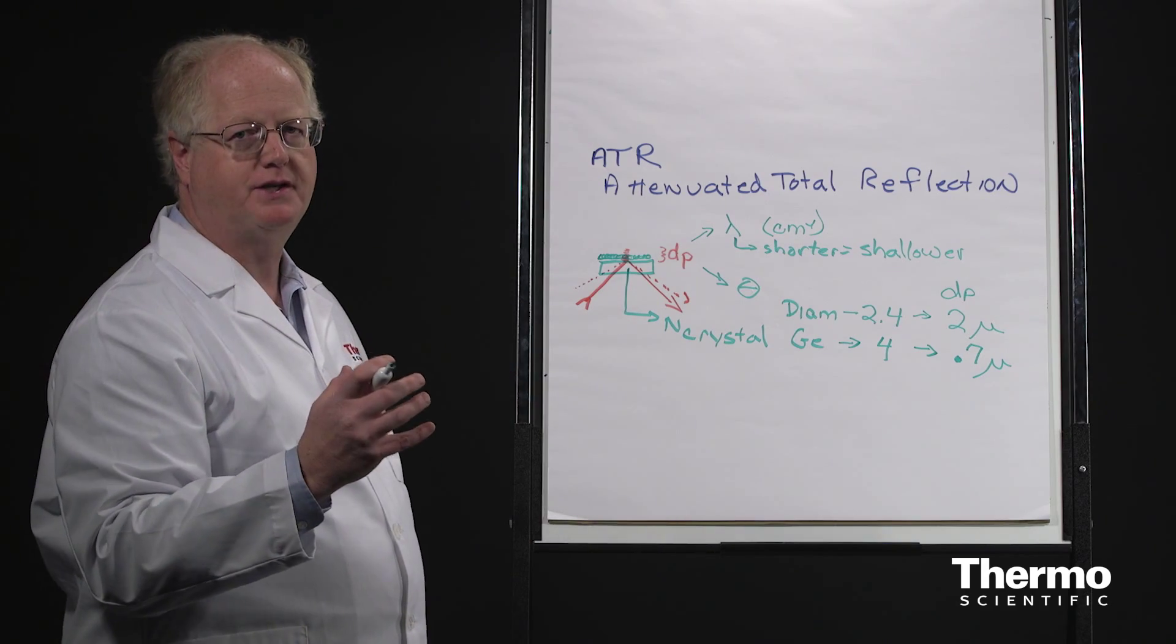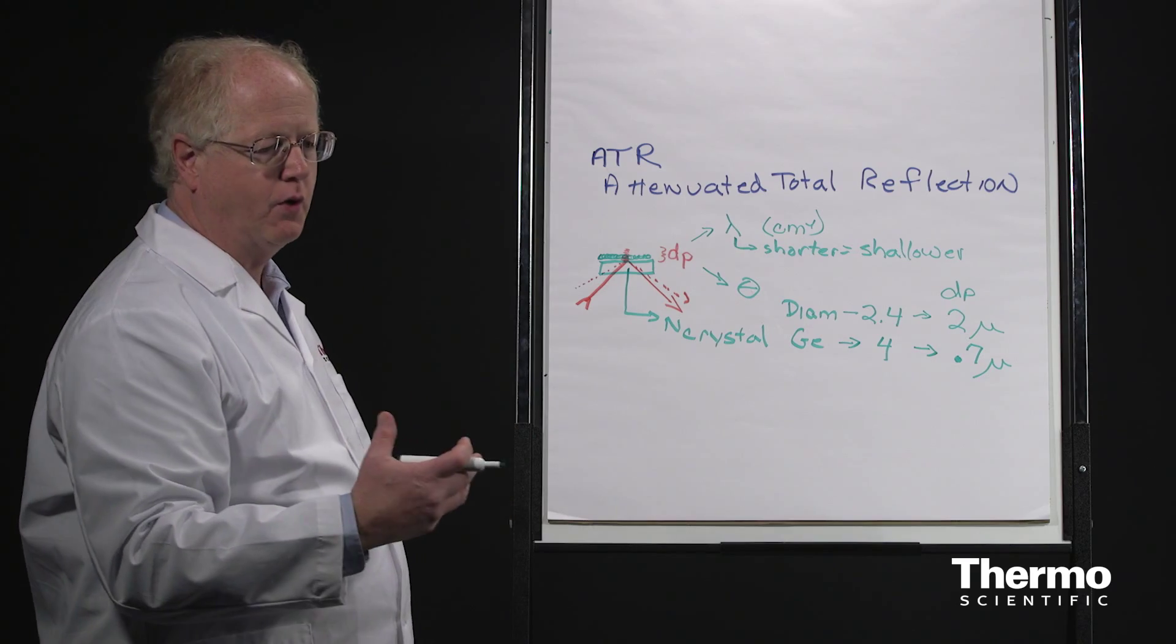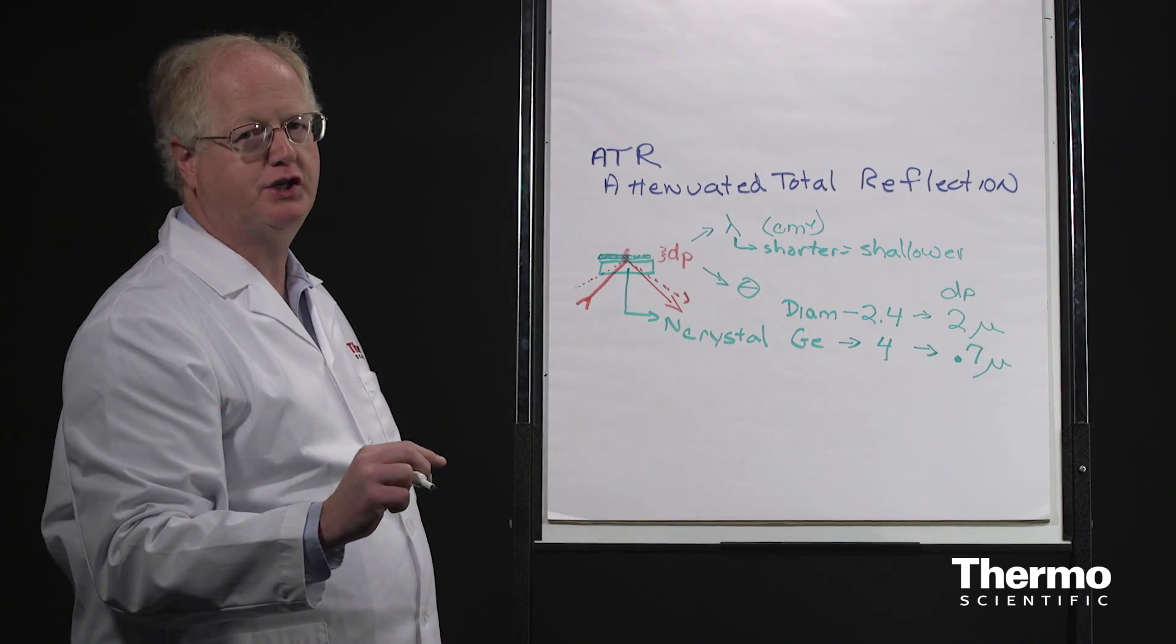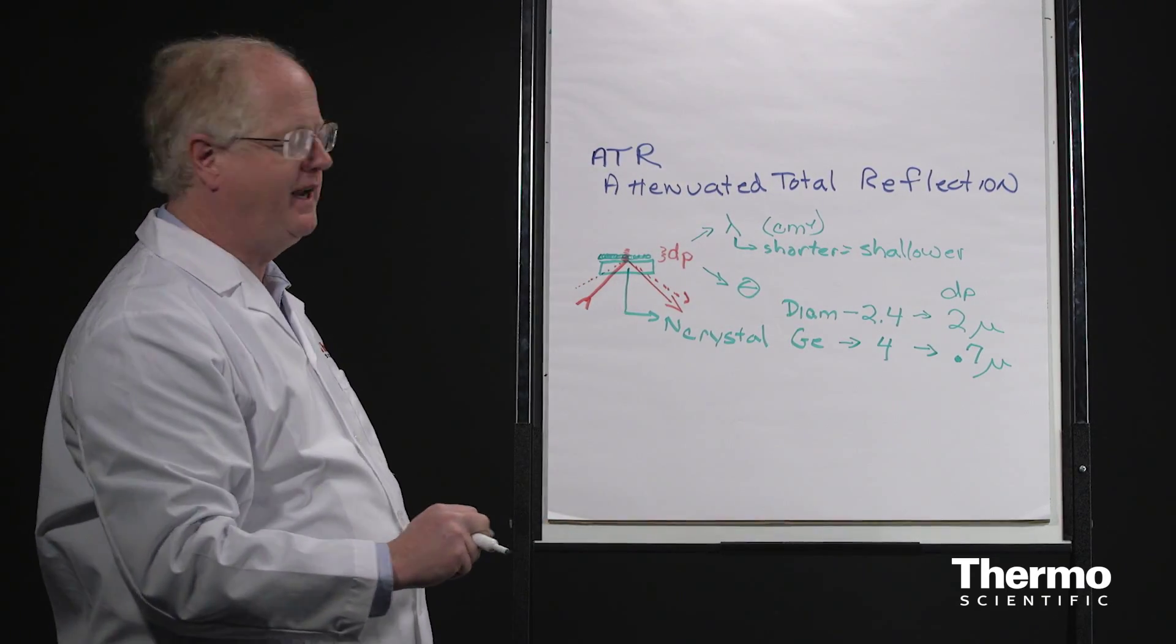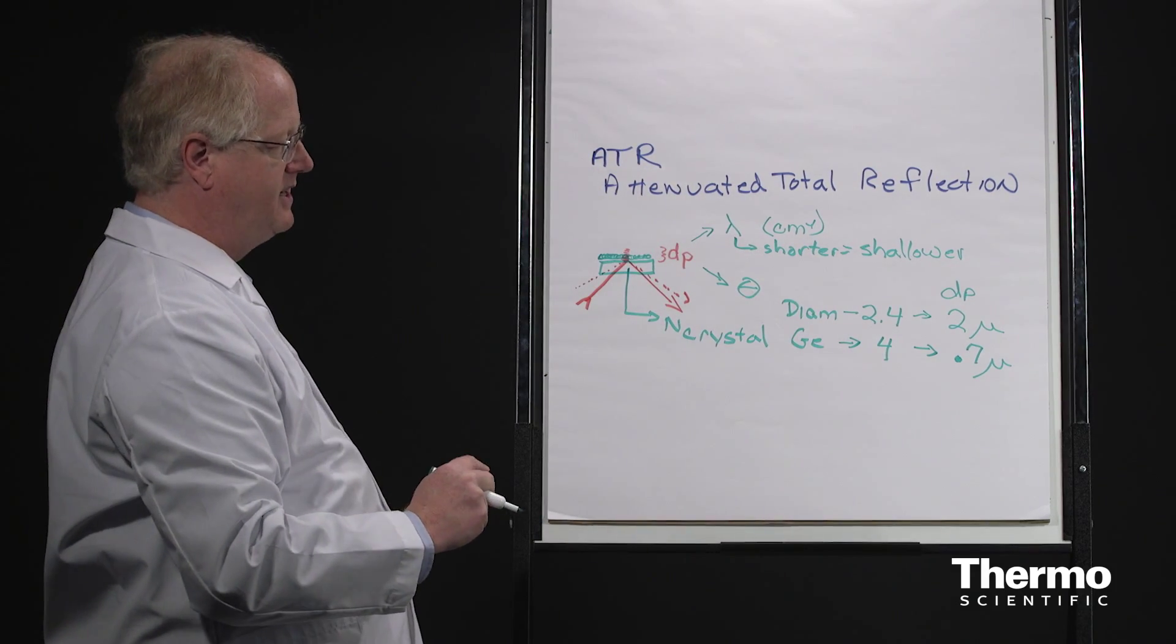If you have a material such as a carbon black rubber, something that scatters or absorbs very strongly, you want a shallow depth of penetration because otherwise you're going to get over absorption. So in those cases, you use germanium. The general purpose crystal that people use is diamond.